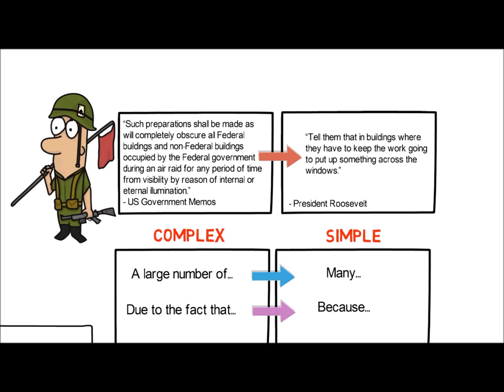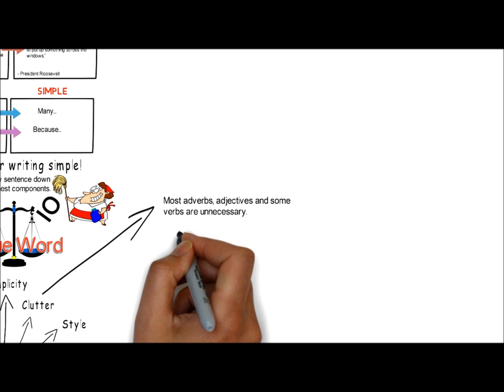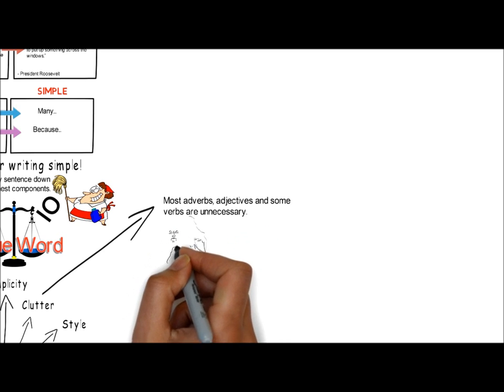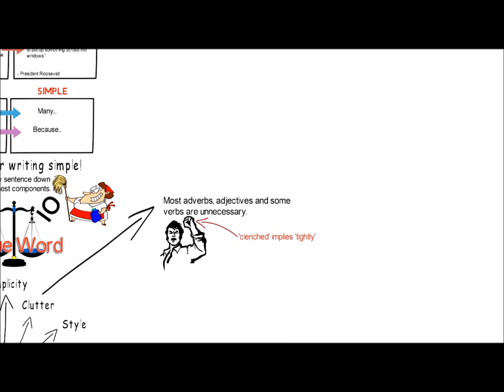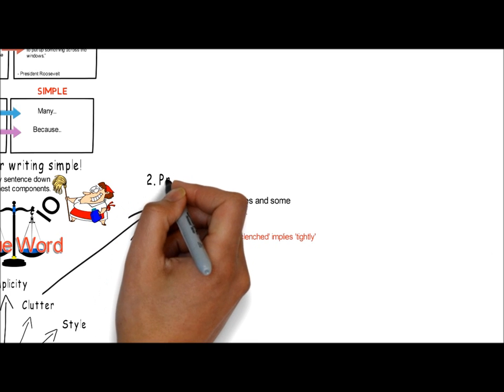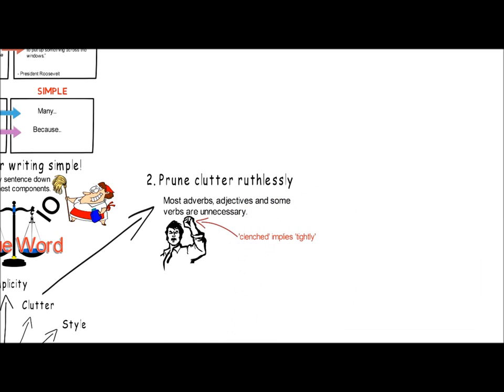Let's move on to the second principle for effective writing, which is to avoid clutter. Most adverbs and adjectives and some verbs are unnecessary. An example of an unnecessary adverb is 'he clenched his fist tightly' — the verb 'clenched' already implies tightly. Many people also allow small but unnecessary words to creep into their writing that qualifies how they feel and think about a subject. Removing this clutter does not change the meaning of the text, but allows the reader to more effectively read and assimilate the point that you are trying to make. To be an effective writer, you need to continually look for clutter in your writing style and prune it ruthlessly.